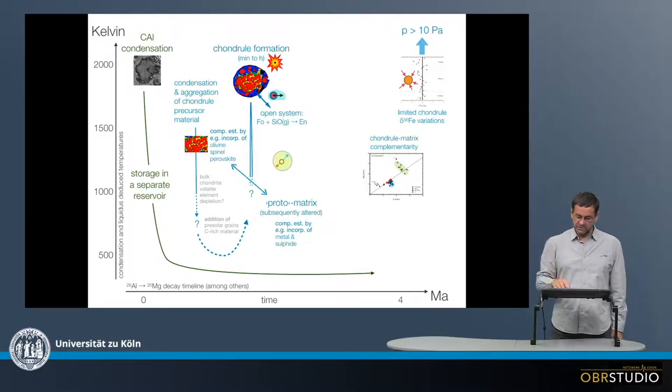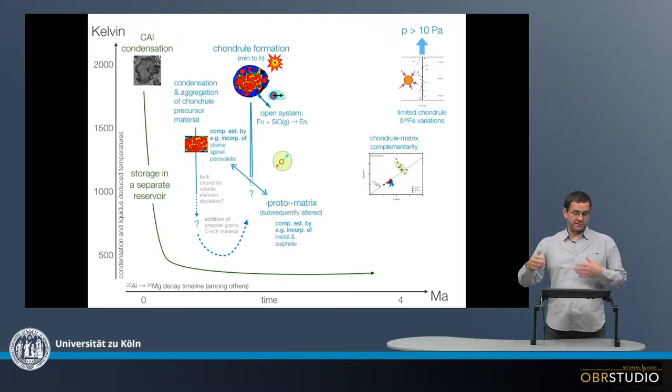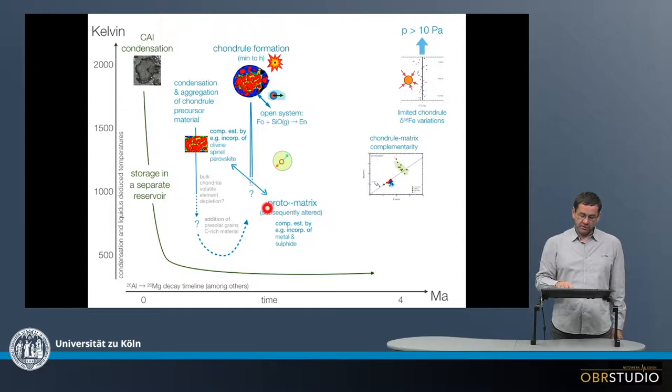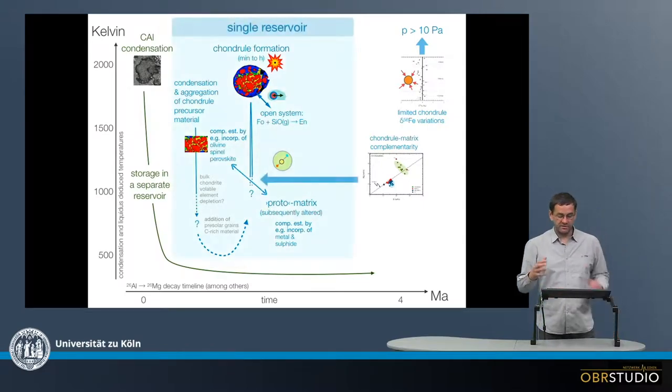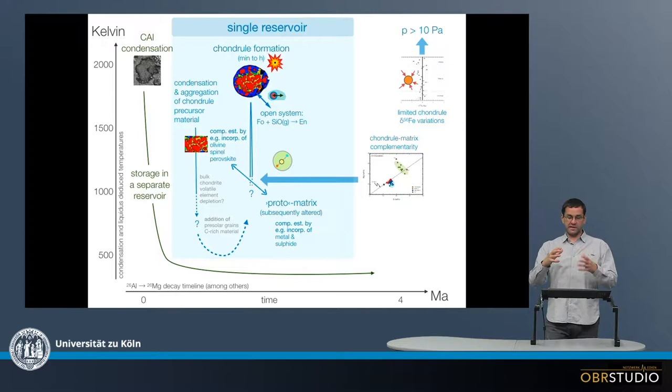So this means, from this complementarity, this is shown here, something like this, that after chondral formation, in the same reservoir, the matrix, or some kind of proto-matrix that was later altered on the parent body for example, formed in the same reservoir. So there was a single reservoir for chondral and matrix formation and a high temperature event here, and this reservoir had high pressure.